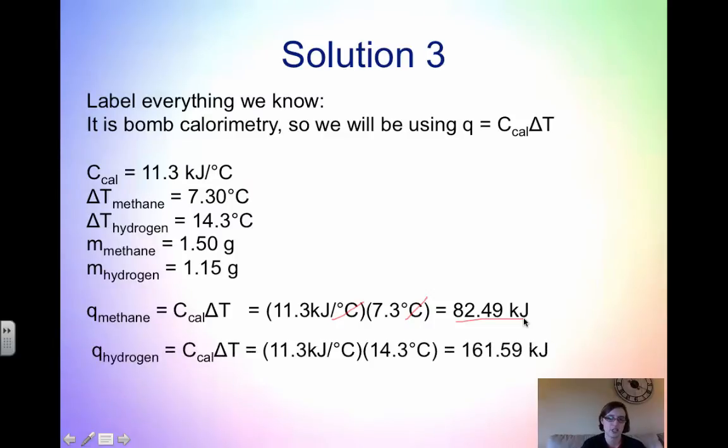Then do the same for hydrogen. We take the calorimeter constant times the change in temperature. Because this is in the same bomb calorimeter, the constant is the same. Otherwise we wouldn't be able to compare if they weren't the same. We multiply by the change in temperature, our degrees Celsius cancels, and we get 161.59 kilojoules.